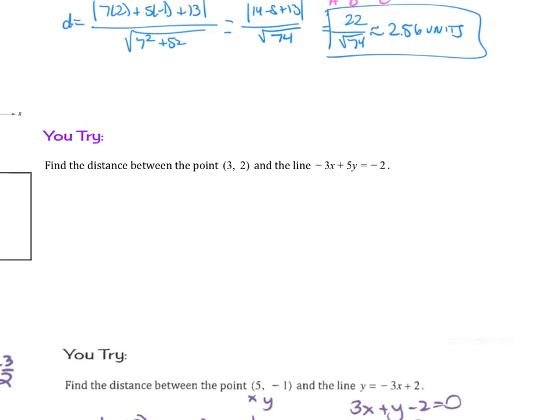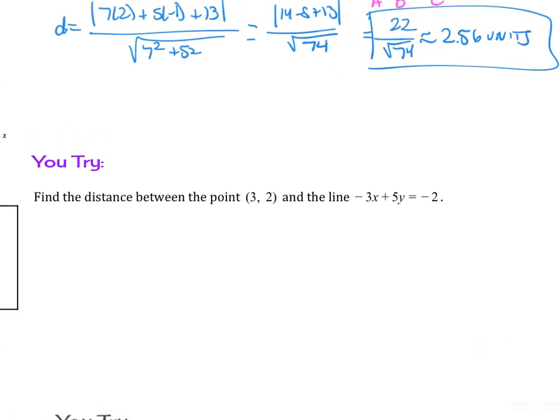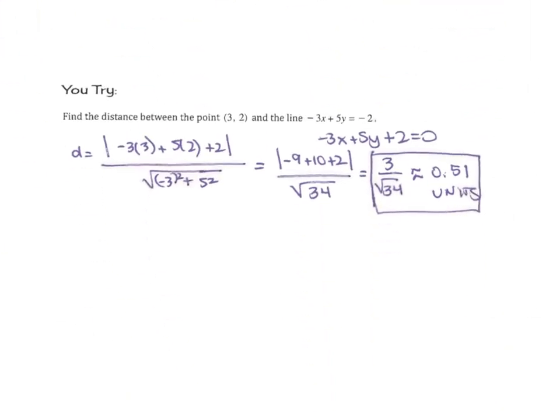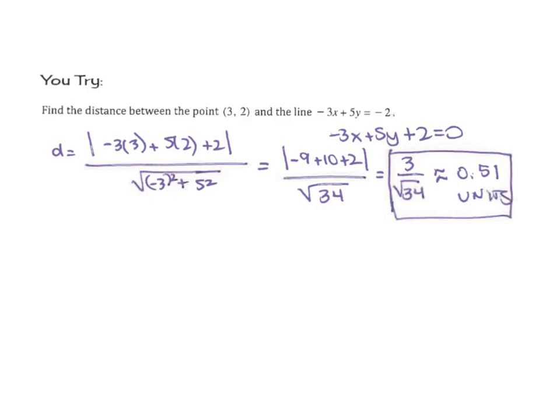Try the next example: find the distance between the point (3, 2) and the line negative 3x plus 5y equals negative 2. You should get 3 over root 34, or approximately 0.51 units.